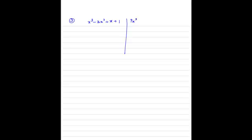Question number 3: if the zeros of the polynomial x cubed minus 3x squared plus 3x plus 1 are a minus b, a, and a plus b, find the value of a and b. We know that for a polynomial px cubed plus qx squared plus cx plus d equals 0, the sum of the roots alpha plus beta plus gamma is given by minus q divided by p, and alpha beta gamma equals minus d divided by p. We use p and q here because a and b already appear in the question.